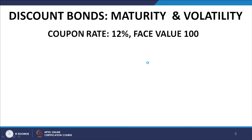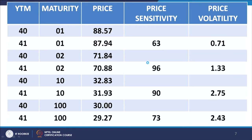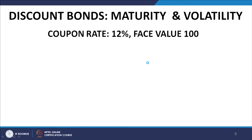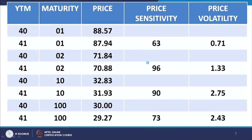As far as discount bonds are concerned regarding the maturity-volatility relationship, the situation is similar to that of price sensitivity. In this table, I have considered a bond with a face value of 100 units and a coupon rate of 12 percent. I have worked out the price sensitivity and price volatility corresponding to a YTM change from 40 percent to 41 percent for different maturities.